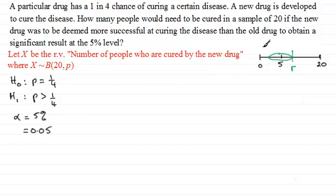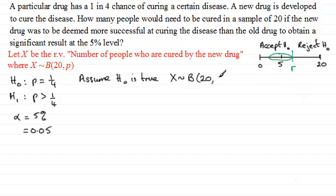So what I've got here then is that this region here I'm going to accept the null hypothesis H0. And in this region here I'm going to reject the null hypothesis in favor of the alternative hypothesis. So what we do is we assume then that the null hypothesis is true. So if the null hypothesis is true what we've got is that x is distributed as a binomial distribution, n is 20 and that probability of success is a quarter.